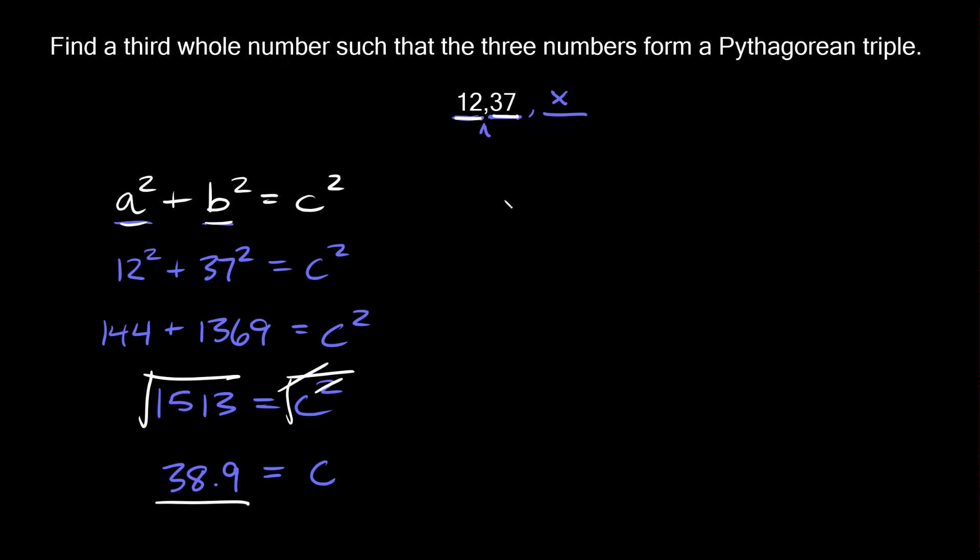What we can try instead this time is assume that this big number 37 is maybe the hypotenuse and maybe what we were actually missing was one of the shorter sides. Again these three numbers have to satisfy this equation a² + b² = c².